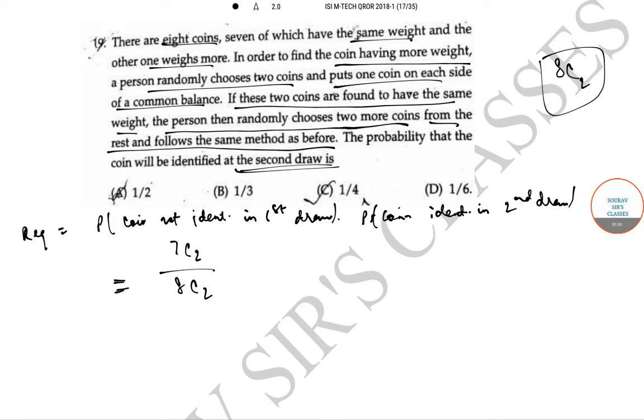So, 7c2 by 8c2 into probability that the coin is identified in second draw. After the first draw we have been left with 6 coins.